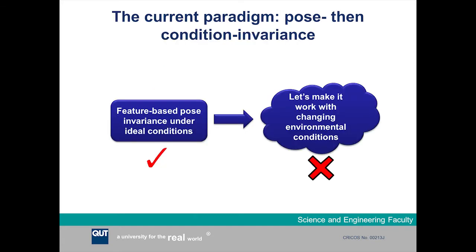To relate this work to what has come before it, typically in the past place recognition, visual navigation, and SLAM systems in general have taken the approach of extracting classical visual features from the image and then performing place recognition. More recently, when place recognition over long periods of time and under changing conditions became more a focus of research, we've tried to adapt these feature-based methods and found it quite difficult, first and foremost because the features don't work very well under changing conditions.